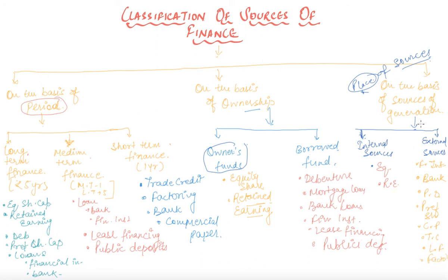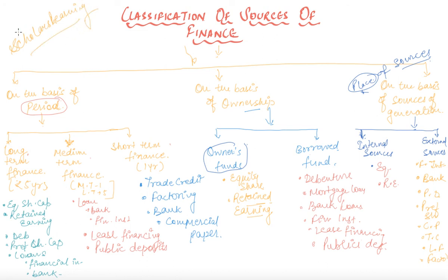So friends, this is the classification we have discussed regarding the sources of finance — just an overview of what we are going to learn in detail in this chapter. In our various classes, we will learn about each of these in detail. You are required to download our Classes Scholars Learning app, and if you have already purchased our classes, we hope you will utilize them very well. Thank you.